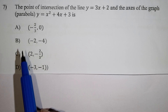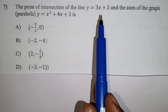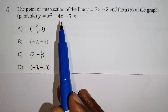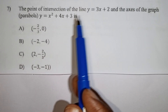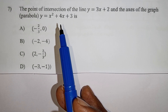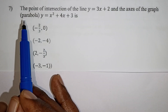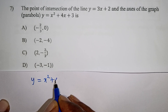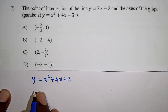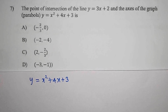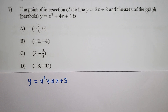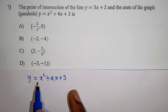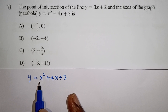Next question: the point of intersection of the line y equals 3x plus 2, and the axis of the graph of the parabola. The parabola equation is y equals x squared plus 4x plus 3. Find the axis. Completing the square: add and subtract 1, so x squared plus 4x plus 1 squared minus 1 squared. Three terms form a plus b whole squared.